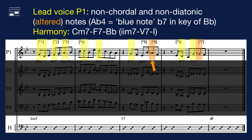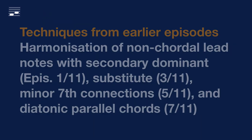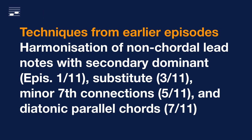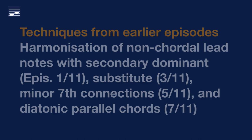These include a blue note — the lowered 7th, Ab — and a lowered 6th degree, Gb. We'll use a subset of harmonization techniques from earlier episodes for the non-chordal notes in the lead. I'll illustrate these in the score example.